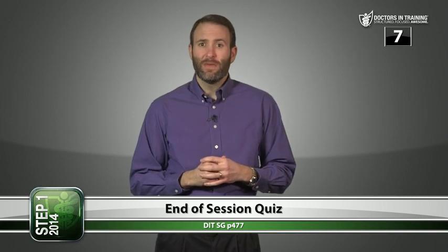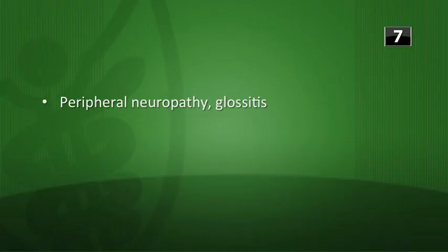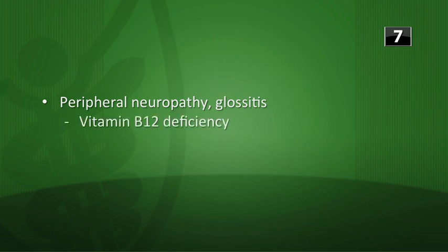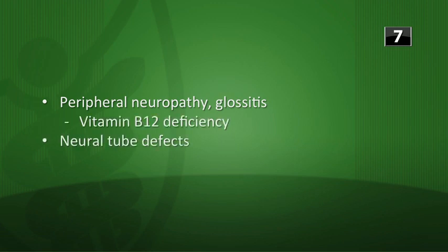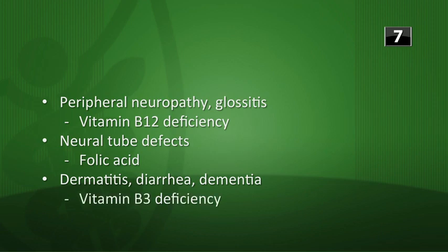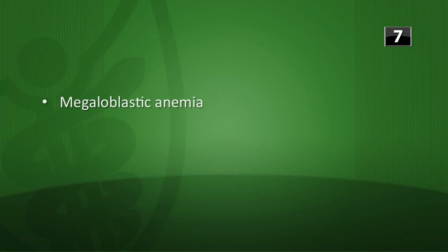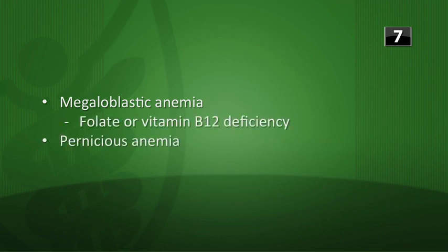Which vitamin deficiency matches each description? Peripheral neuropathy and glossitis — that's vitamin B12, but you might also see that with B6. Neural tube defects — that's folic acid. Dermatitis, diarrhea, dementia — those are the big three Ds, indicating a niacin deficiency, that's B3, and that's pellagra. Megaloblastic anemia is either folate or B12 deficiency. Pernicious anemia — that's a B12 deficiency.